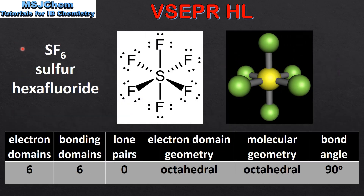Next we look at molecules with 6 electron domains around the central atom, starting with SF6, which is sulfur hexafluoride. By looking at the Lewis structure we can see there are 6 bonding domains around the central atom. The electron domain geometry and the molecular geometry are both octahedral and the bond angle is 90 degrees.